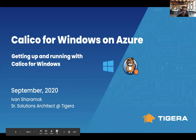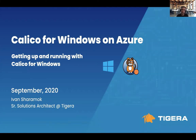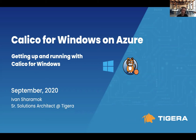This session is going to cover Calico for Windows on Azure. Previously it was set up as Calico on AKS, but there was an advertisement and the session was changed. Calico on AKS will run in October — currently scheduled for October 15th.